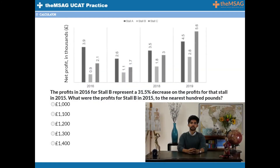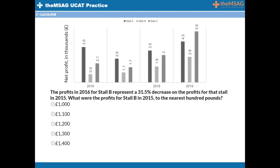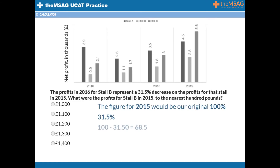Question 4. The profits in 2016 for stall B represent a 31.5% decrease on the profits of that stall in 2015. What were the profits for stall B in 2015 to the nearest £100? The figures for 2015 would be our original 100%. This has fallen by 31.5%, so 100 minus 31.5 equals 68.5.